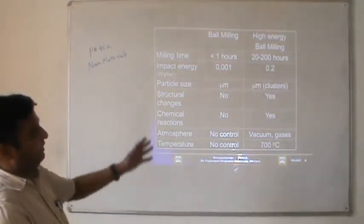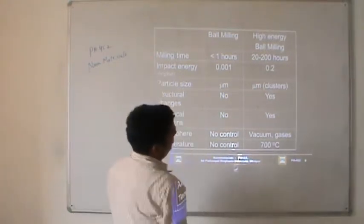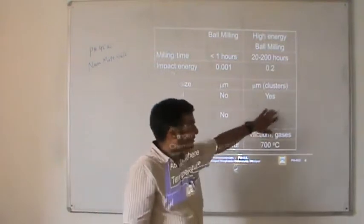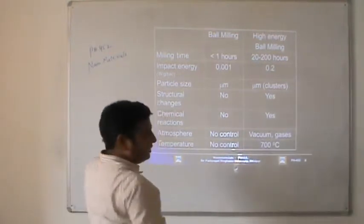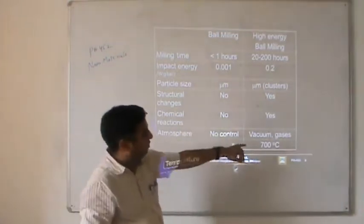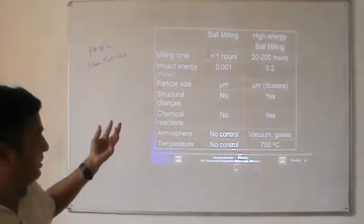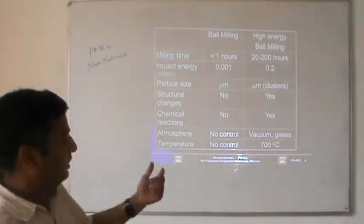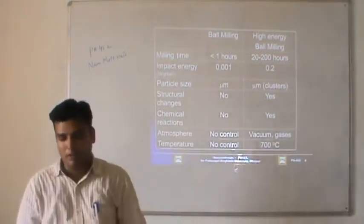In high energy ball milling, structural changes occur, and those structural changes are responsible for the change in composition of the material. That composition change can produce alloys in nanosize. Whenever we look for formation of alloys in nanosize, we use the high energy ball mill. Chemical reactions occur in high energy ball milling, and if oxidation of alloy happens, the energy released due to impact of balls with jar and powder will control those parameters. In high energy ball milling, we can also control the atmosphere of the material and the temperature, approximately around 700°C.